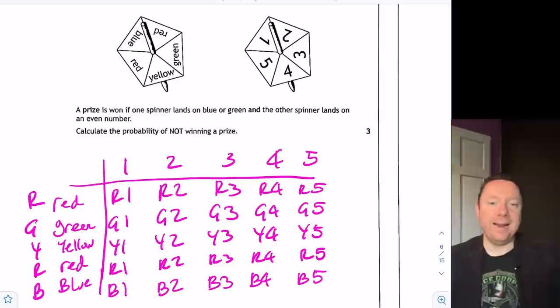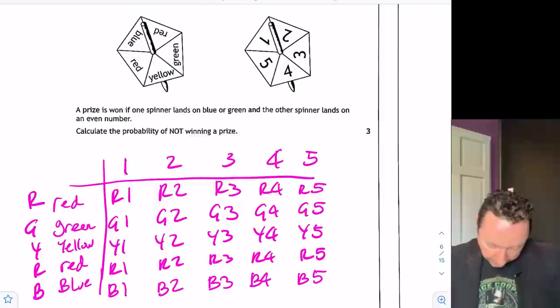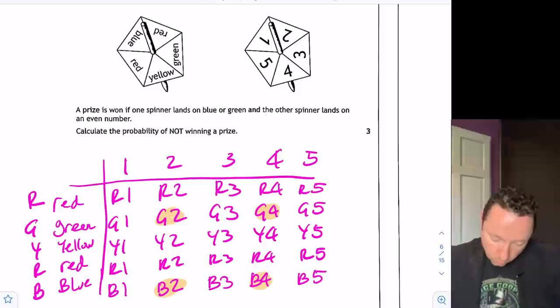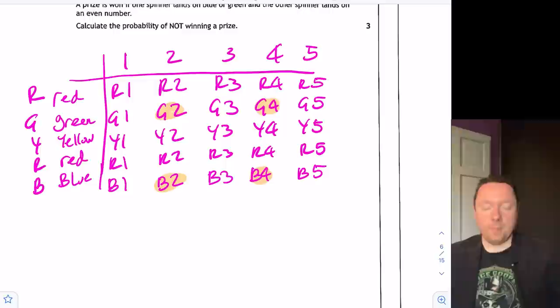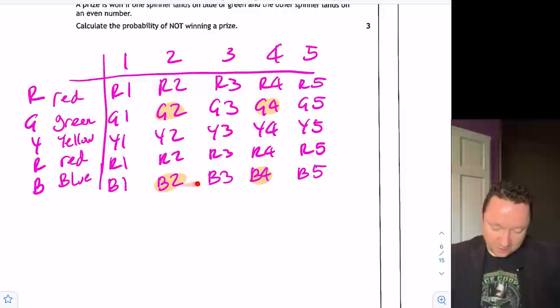Now it says a prize is won if the spinner lands on blue or green and the other spinner lands on an even number. So let's start highlighting the winning cells. We can have blue which is the bottom ones and it has to be even. So two is a winner and four is a winner. It also wins if it lands on green with an even number. Two is a winner, four is a winner. So we've got one, two, three, four winners. So how many losers is there? Well we can either count them or use a bit of maths. We've got five by five options is 25. Take away these four means I've got a losing chance of 21 out of 25 possibilities.